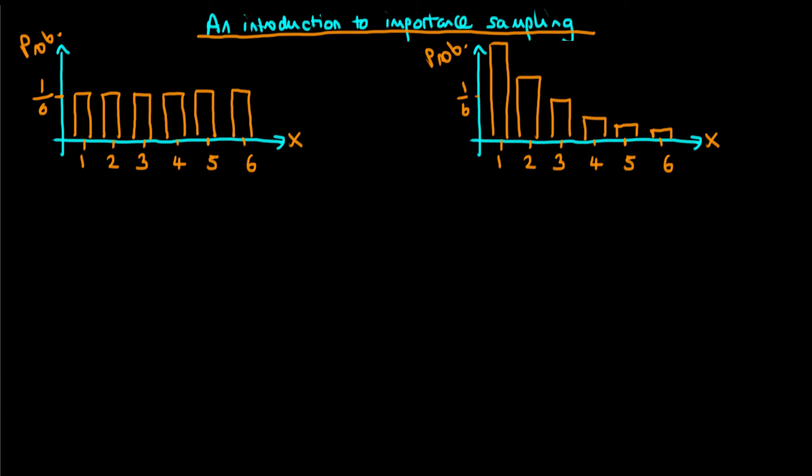In this video I want to provide an introduction to a technique known as importance sampling. Importance sampling gives us a way to approximate quantities of interest for a given distribution even if we can't directly sample from that particular distribution. To introduce this technique I'm going to use an example.